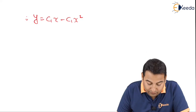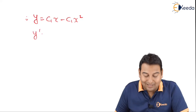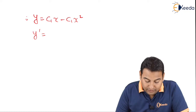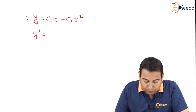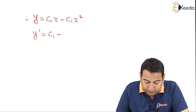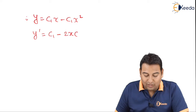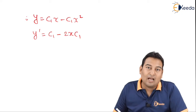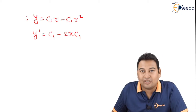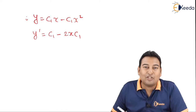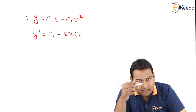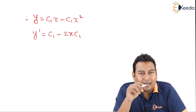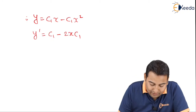We already have y = c1x − c1x². Now let's find y'. Differentiating with respect to x: y' = c1 − 2c1x. We now have both y and y'. Step 2 is done. If the problem required y'', we would find one more derivative.